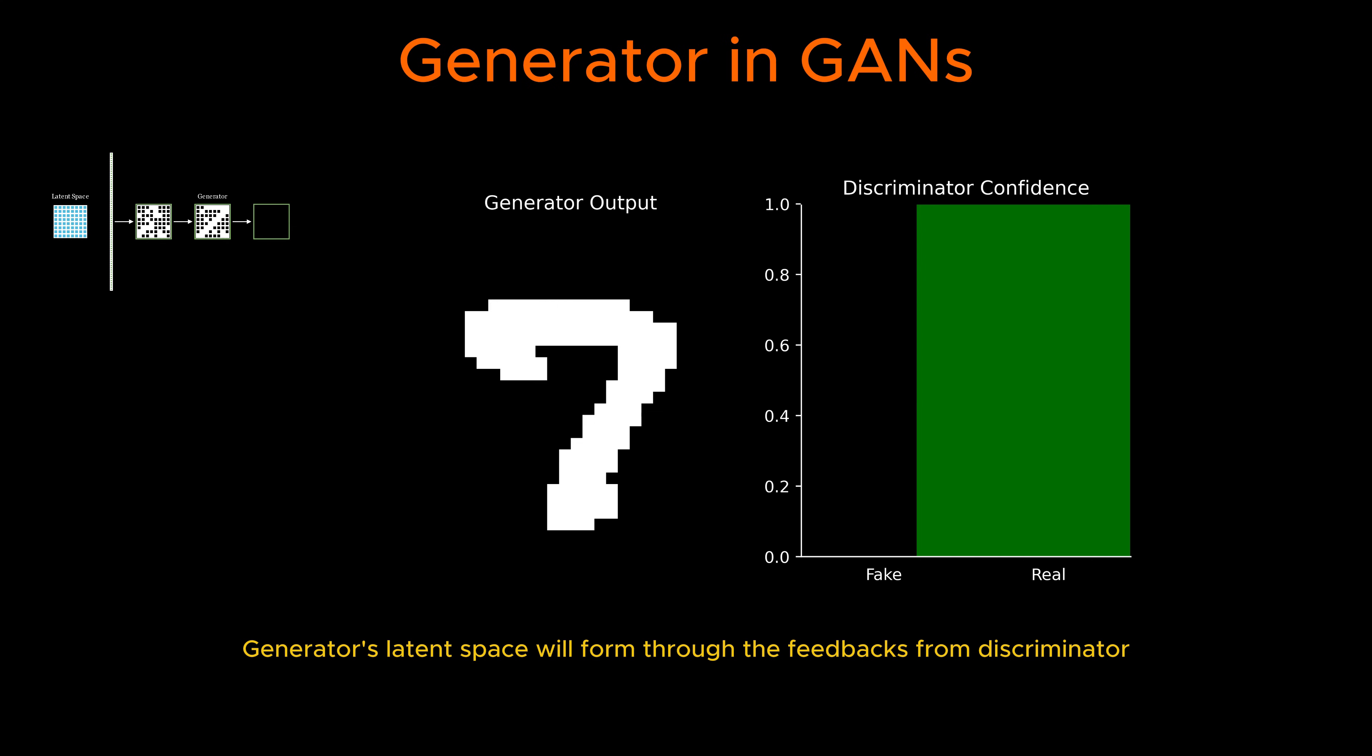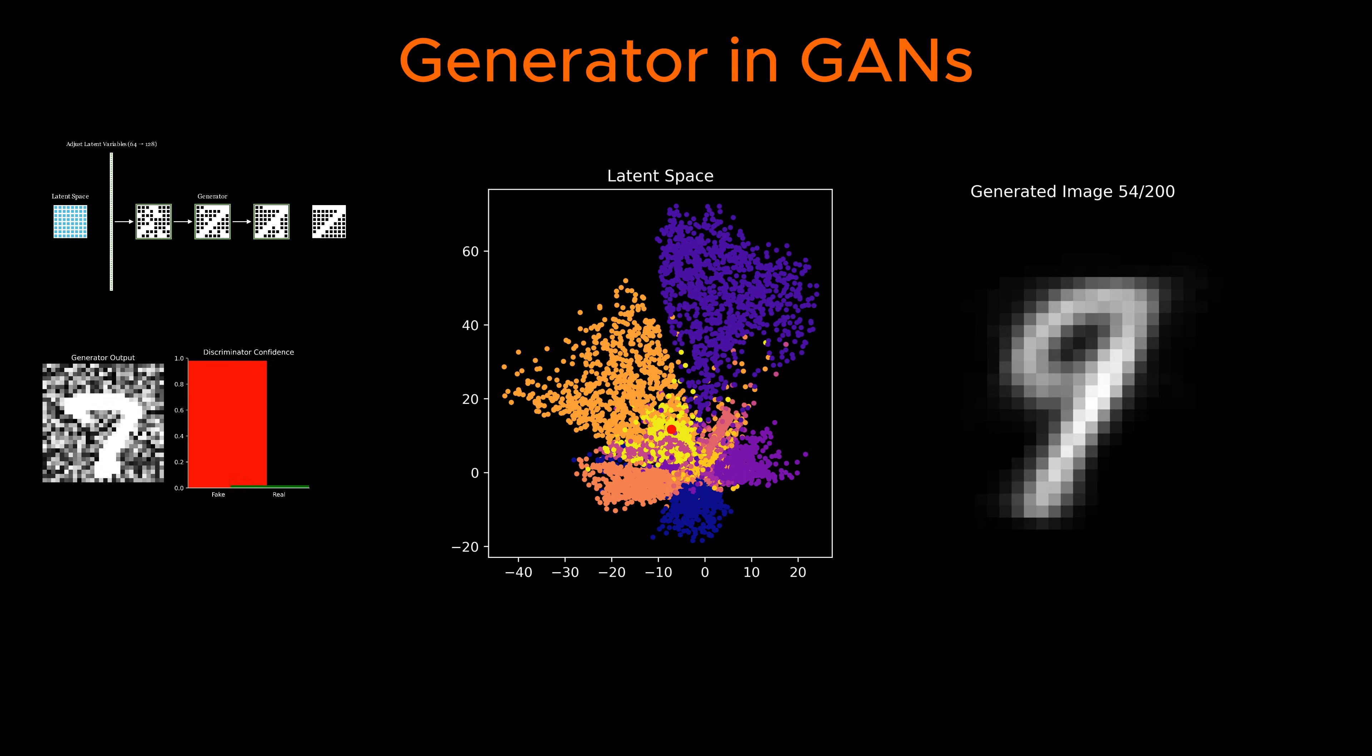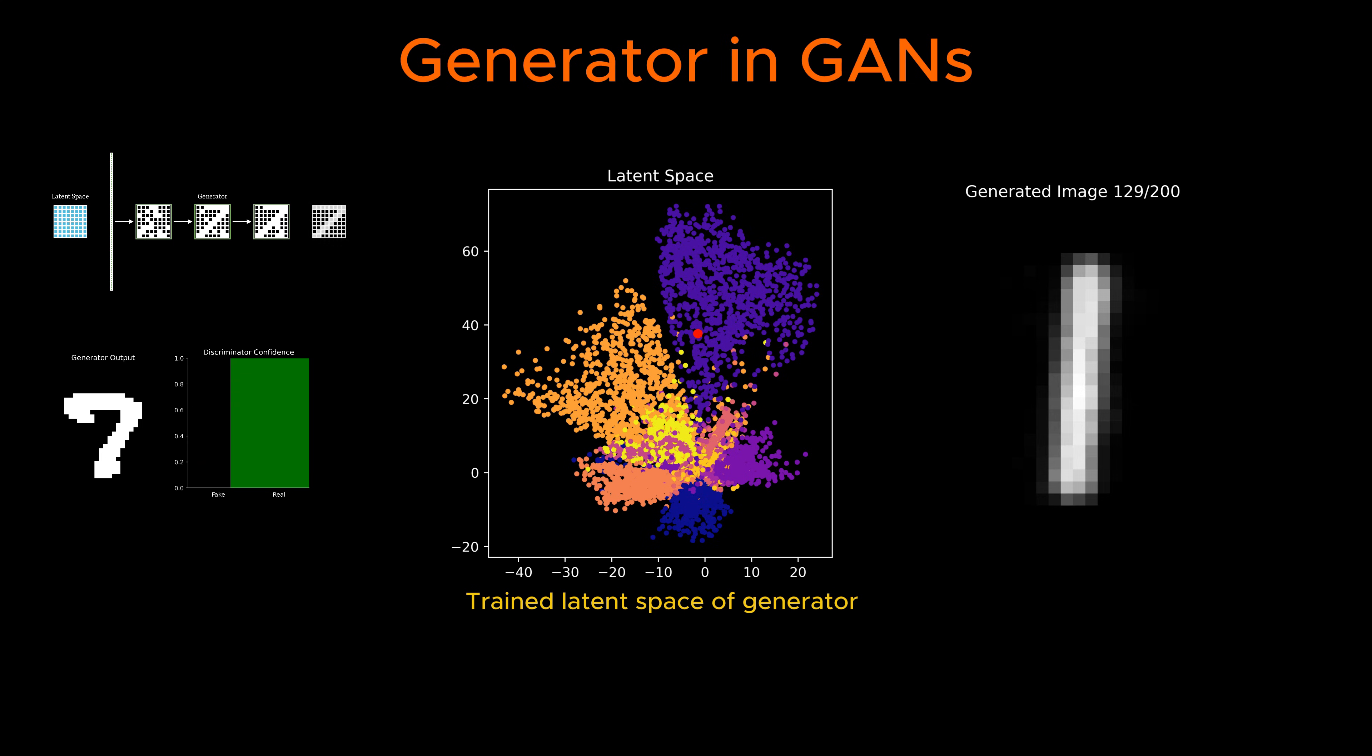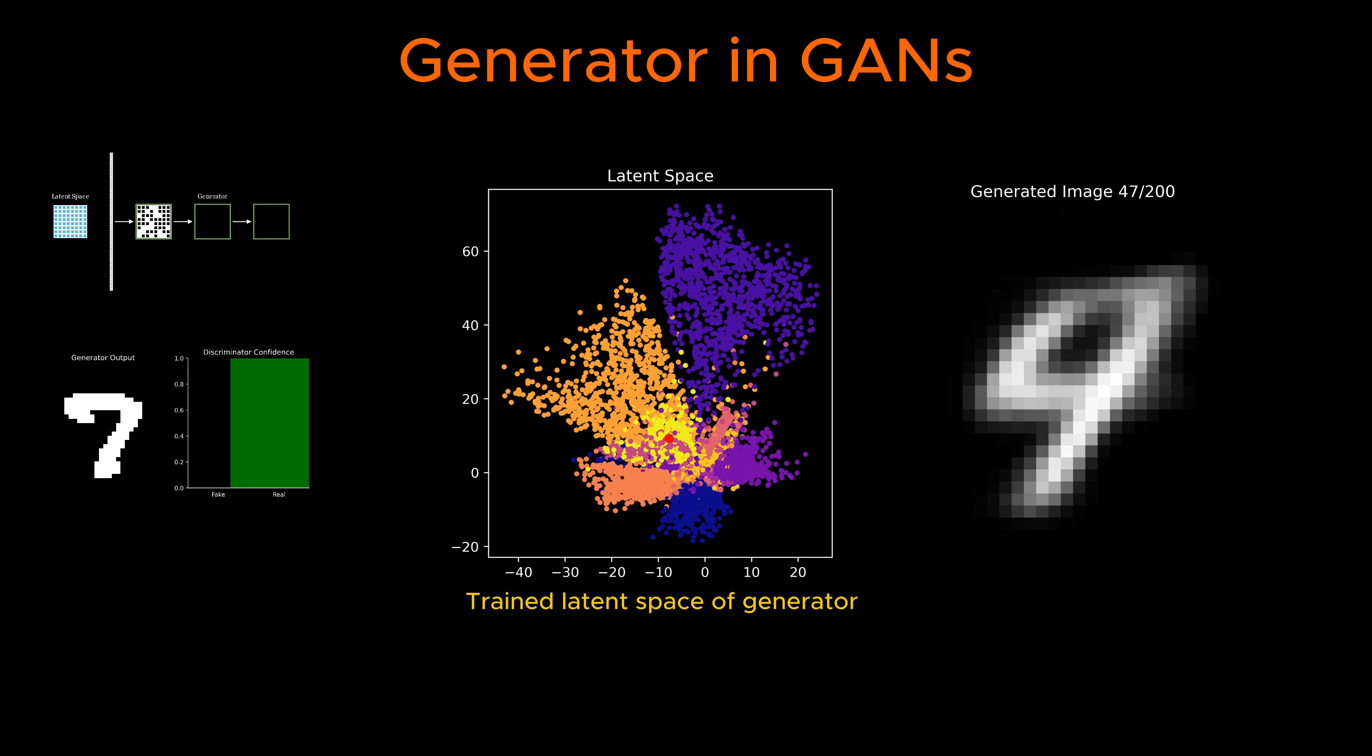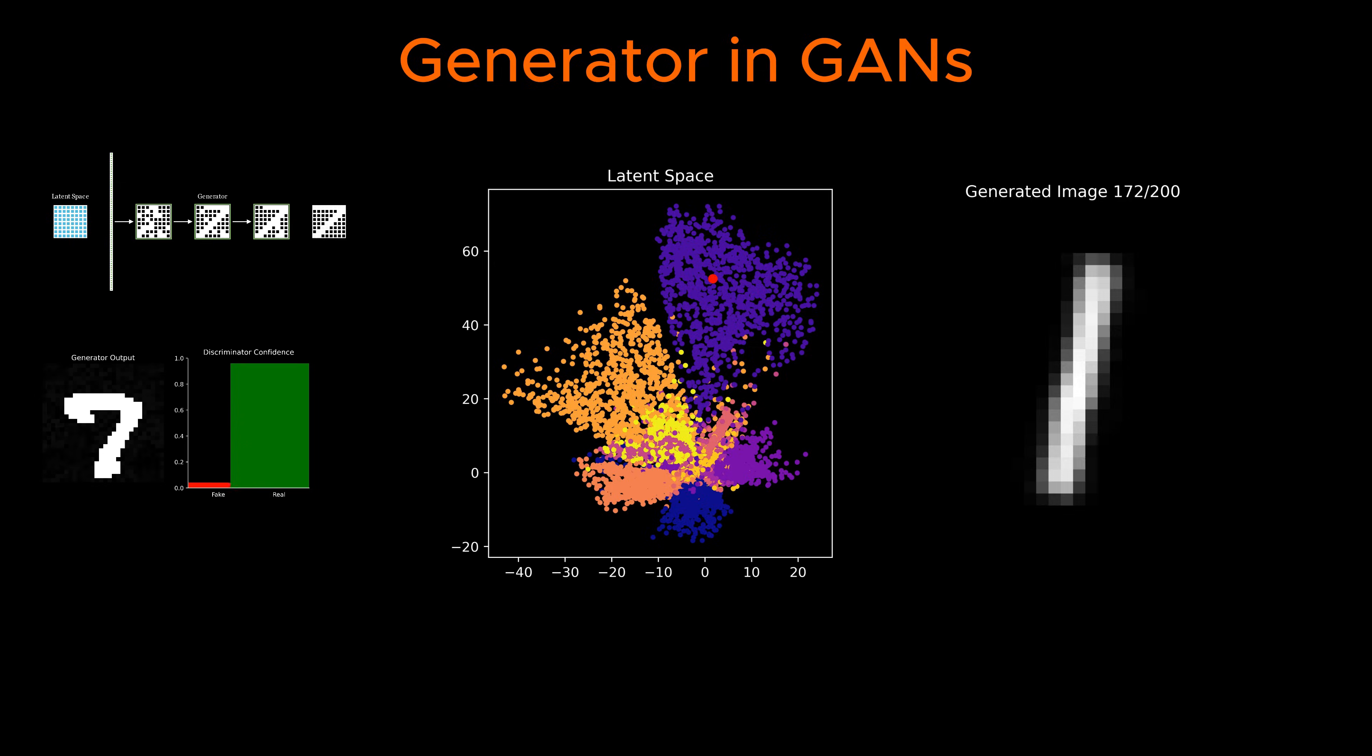One of the fascinating aspects of this process is how the latent space encodes variations in image properties. By interpolating between different points in this space, one can smoothly transition from one generated image to another, revealing that the latent space captures underlying structures and features of the dataset. This property allows for controlled image synthesis, where specific aspects such as style, shape, or color can be manipulated by modifying the corresponding latent vectors.